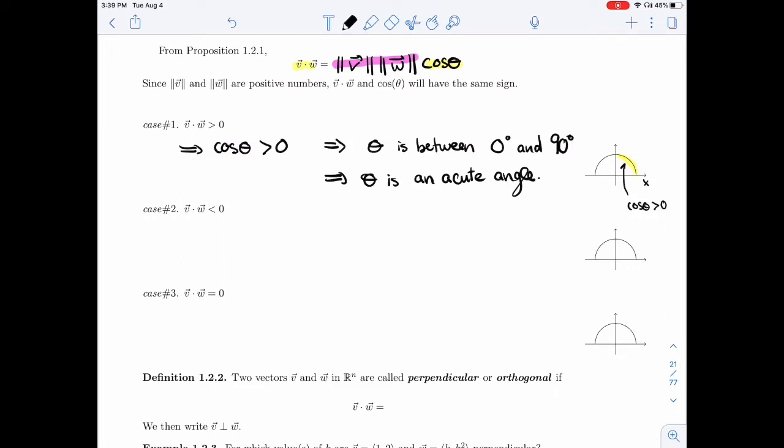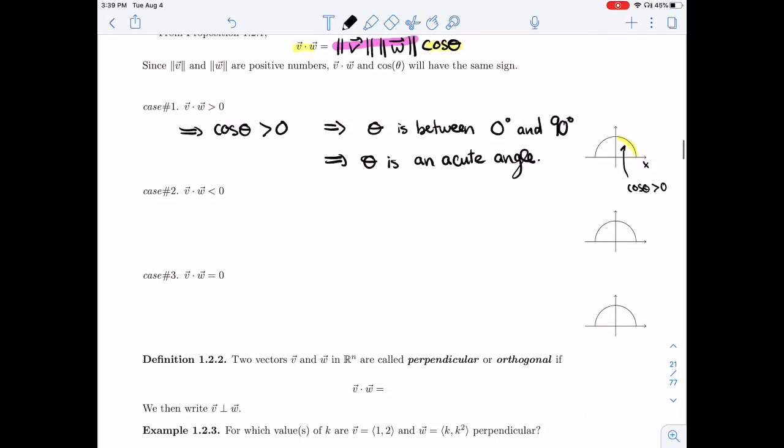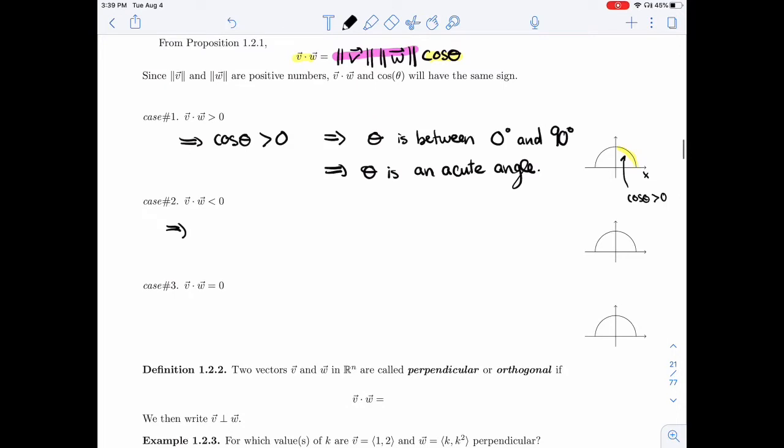So if your dot product is positive, that means your vectors form an acute angle. So if it's negative, if the dot product is negative, well, for the left part to be negative, the right part needs to be negative. And so cosine theta should be negative as well.